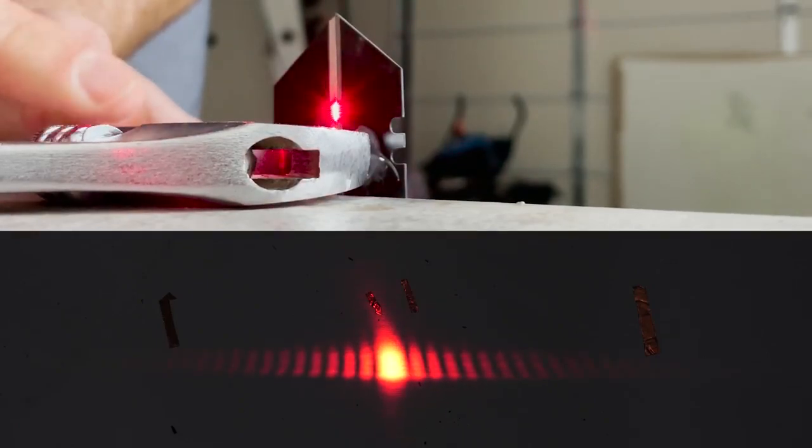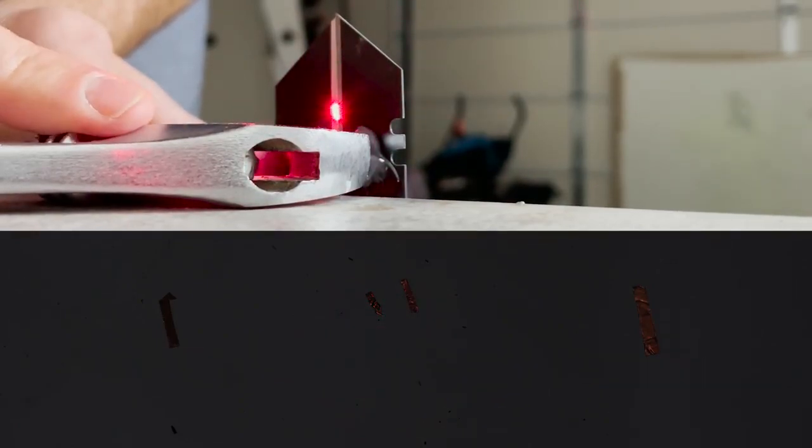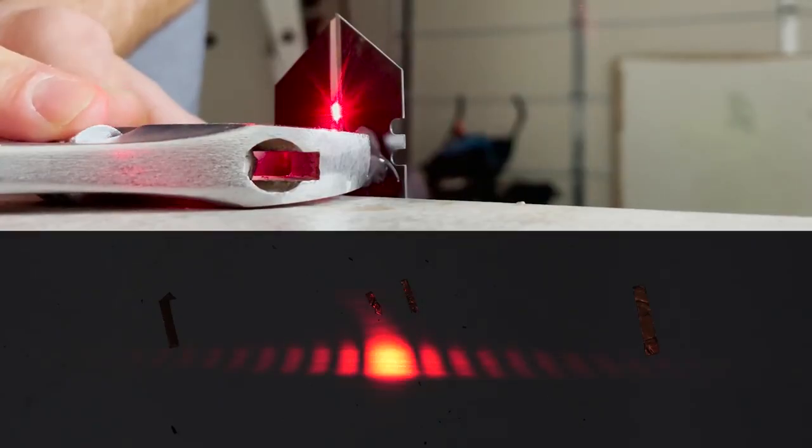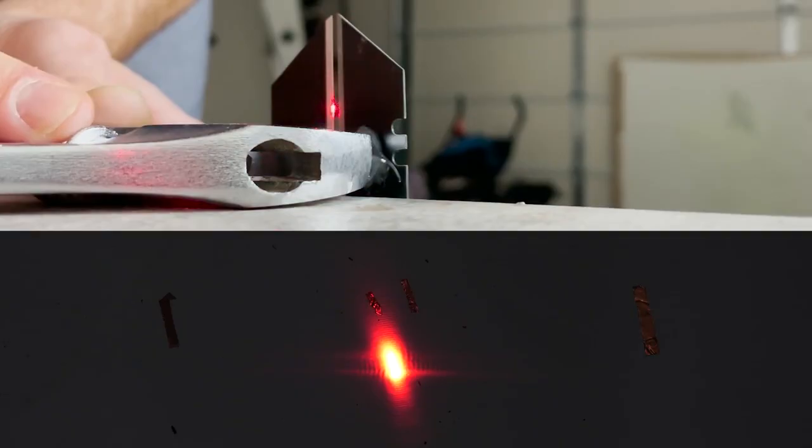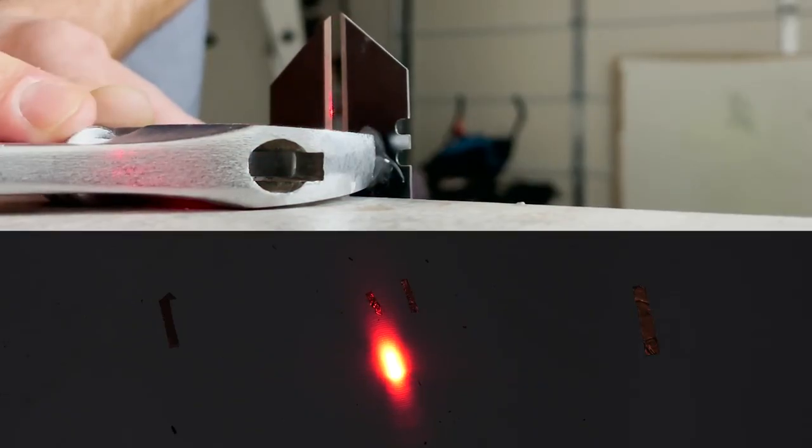Now I already know what you're thinking. You're thinking this isn't some weird thing with the Heisenberg uncertainty principle, but it's actually just the diffraction of light because light is a wave. And so when you send it through something small, it diffracts and spreads out.